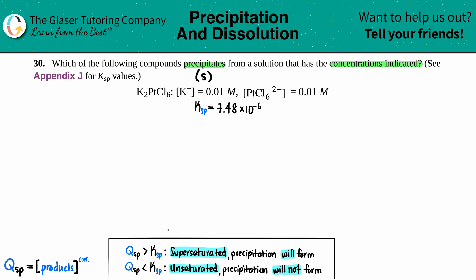In order to find that out, all we have to do is compare a Qsp value, which is like a solubility product not at equilibrium but at any point in time, to the known Ksp.